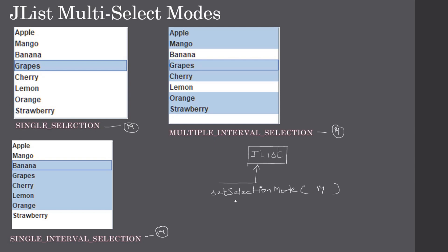The function name is setSelectionMode. Once you set the selection mode, the behavior of the JList will change. The constants can be taken from ListSelectionModel — from this class you can select any of the constants to change the behavior of the JList.